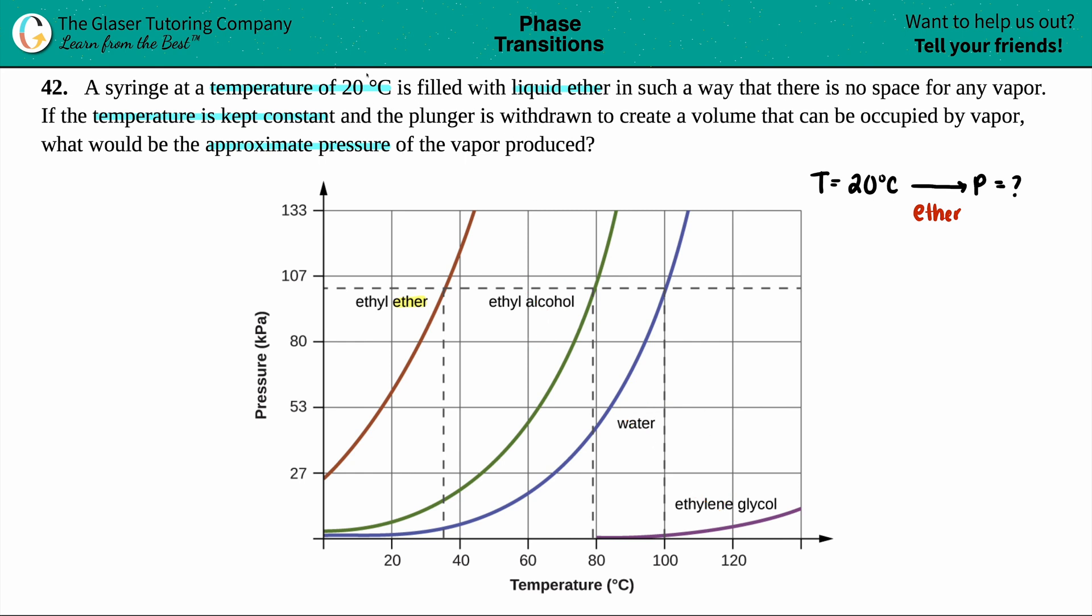So now we have to start at the temperature that they gave us. The temperature is the x-axis. So here's our temps. And they did say we're starting off with 20 degrees Celsius. And voila, here's 20. So I'm going to go up this line until I reach the ethyl ether graph. So I'm going to go up, up, up, and boom, there we go. That's pretty spot on, I think. That's pretty good. So here is where it intersects.